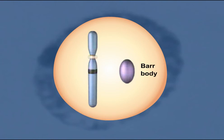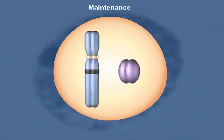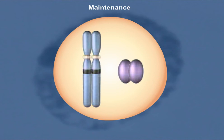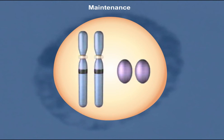After the Barr body is formed, maintenance begins and continues through adult life. The Barr body is replicated just like other chromosomes, but both copies of the replicated Barr body remain highly compacted and essentially inactive.